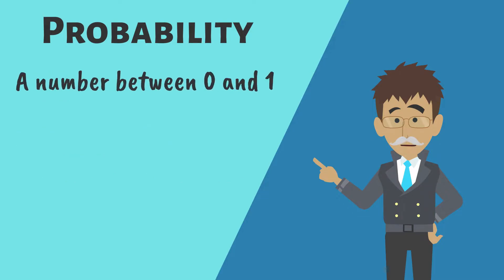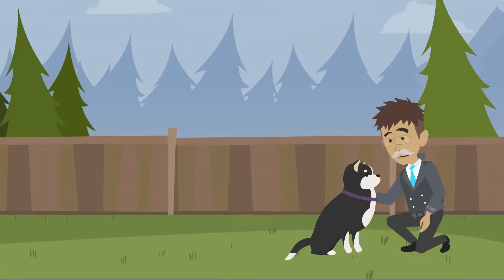Probability is represented as a number between 0 and 1, though we often use percentages to express it. Here, Random. Come here, girl. Who's a good girl? My dog, Random, loves probability.